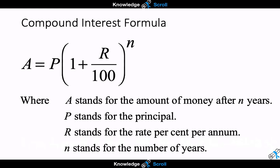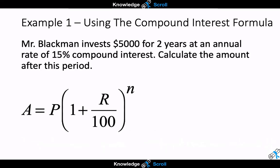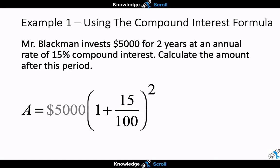We're going to use this same formula to calculate the amount earned from Mr. Blackman's previous question. Plugging in the values — principal of $5,000, rate of 15, and N of 2 — you may use your calculator to solve. In most cases, work out the bracket first, then raise it to the power of N, then multiply by $5,000. If you have a newer calculator, you may be able to input everything in one go.